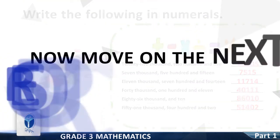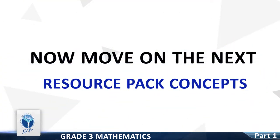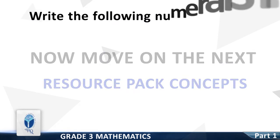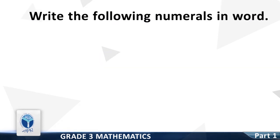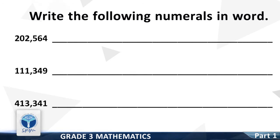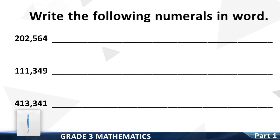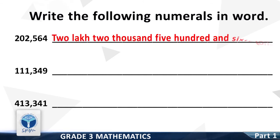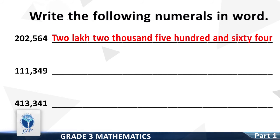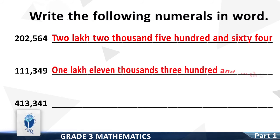Now we move to the next resource pack concept: Write the following numerals in words. The first number is 2,232. Next: 2,564. Good. Next number is 11,349. Good.